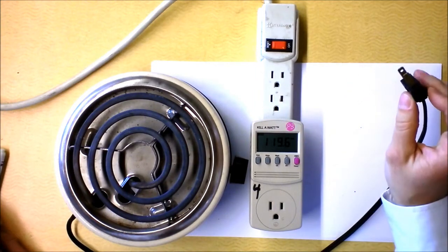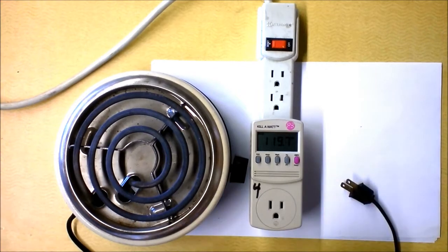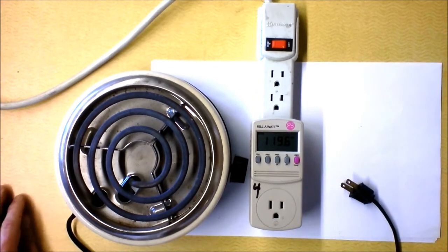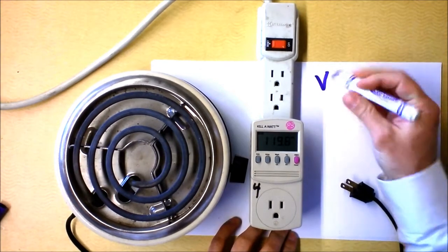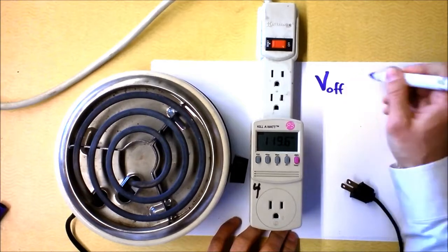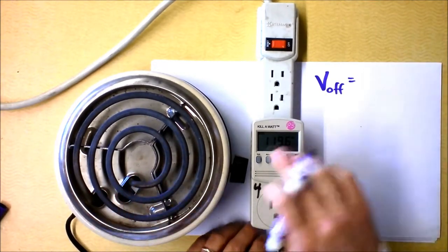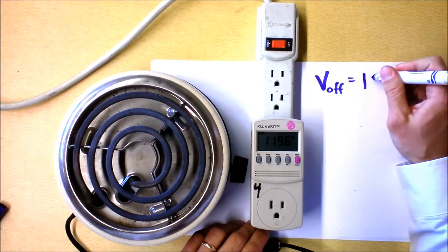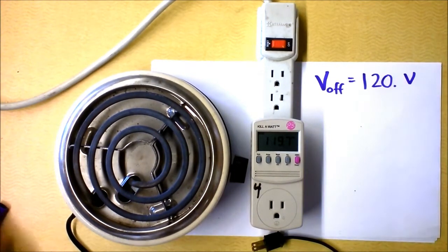What I'm about to do is plug in this hot plate to a kilowatt power meter, but before I do so I want to note the voltage of the outlet when the appliance is off, so that would be unplugged, and I'm only going to do three sig figs here. So I'm going to call this 120 volts.